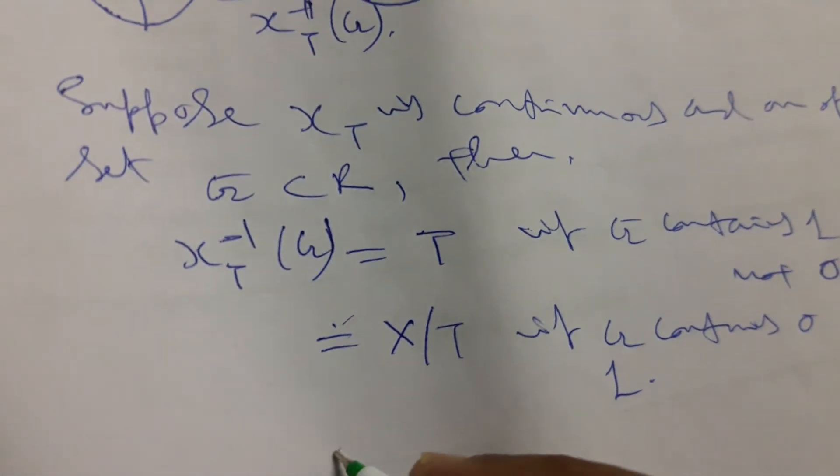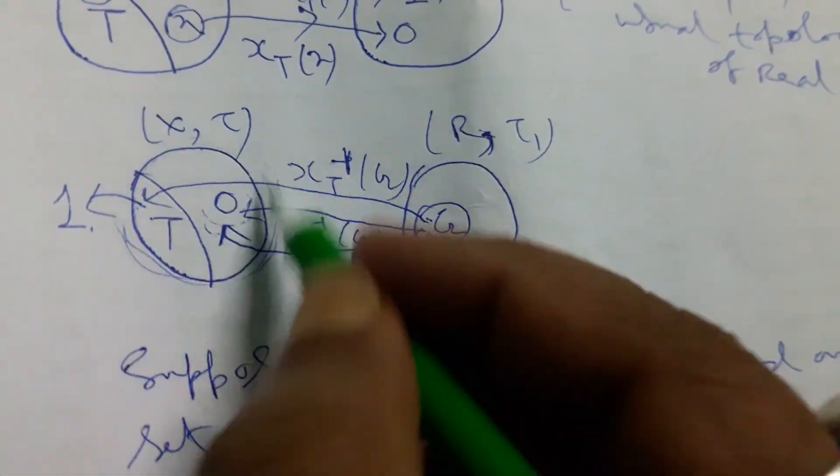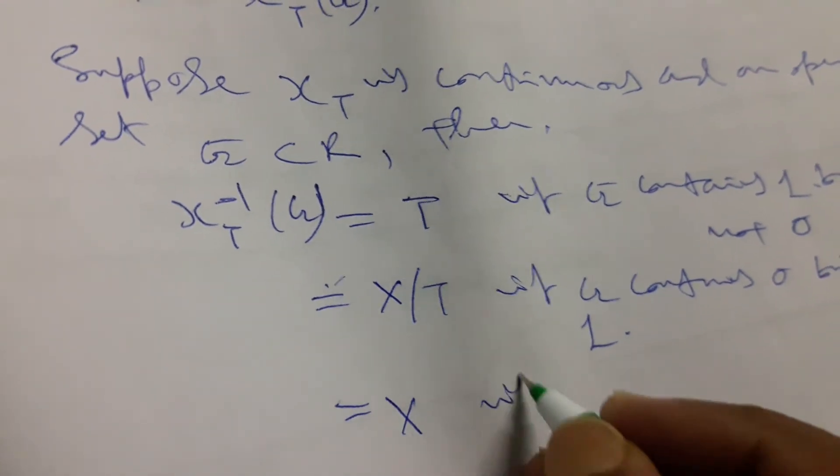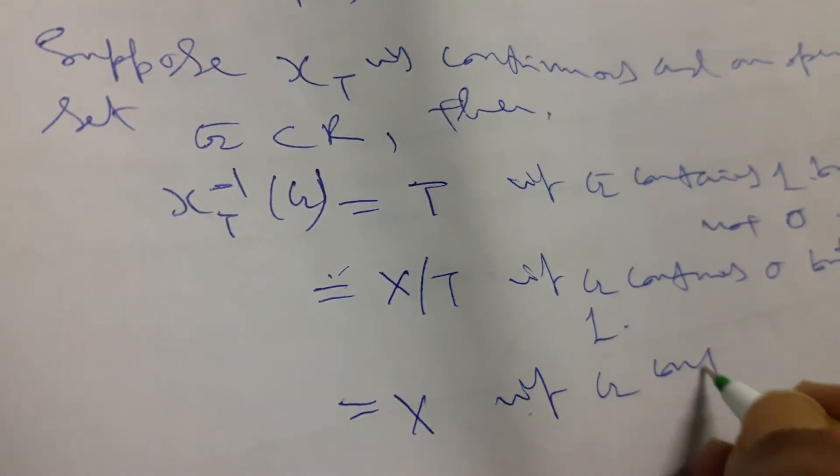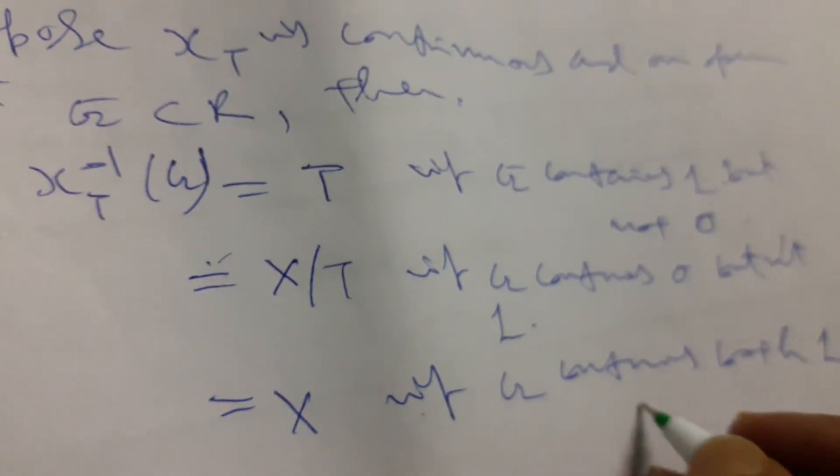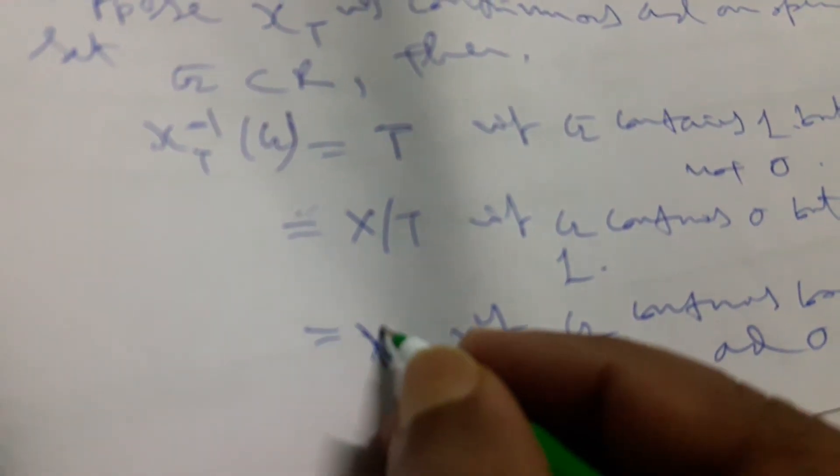And if G contains both of these regions, the total region, that is X. So it will be capital X if G contains both 1 and 0, then it will be the total entire space, capital X.